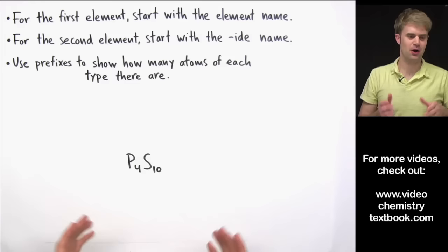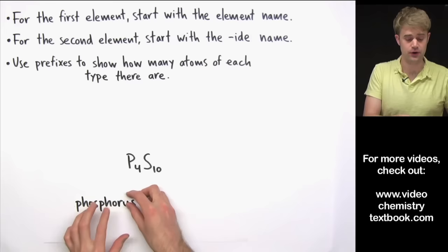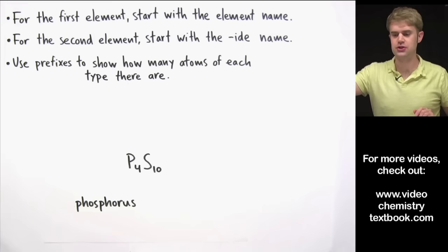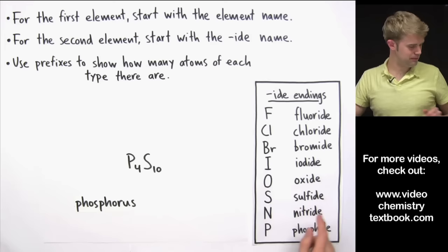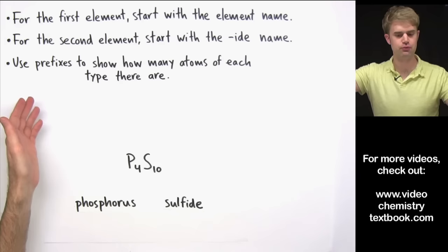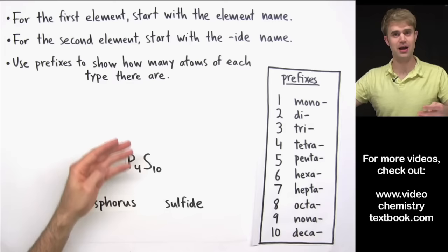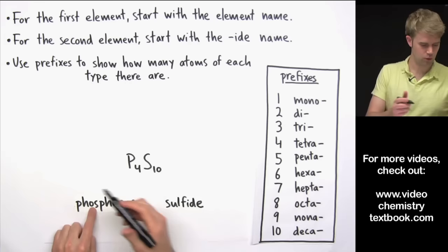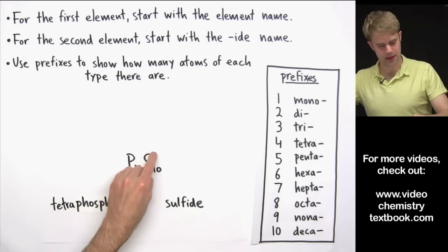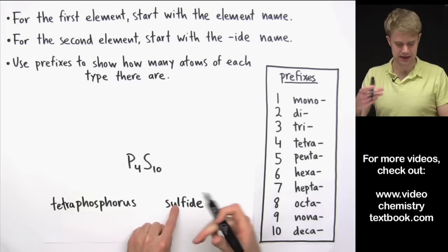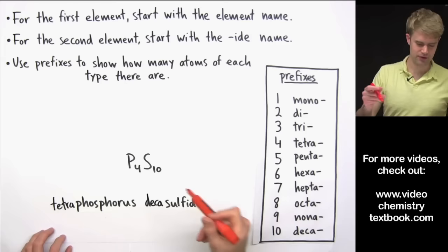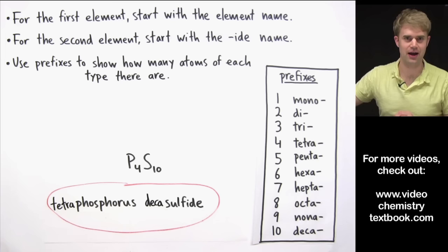Let's look at a few more examples. P₄S₁₀: for the first element, P is phosphorus. For the second element, S is sulfur, and its IDE name is sulfide. Now for the prefixes: P₄ means four phosphorus atoms, so we use 'tetra' — tetraphosphorus. S₁₀ means ten sulfurs, so we use 'deca' — decasulfide. The name of this compound is tetraphosphorus decasulfide.